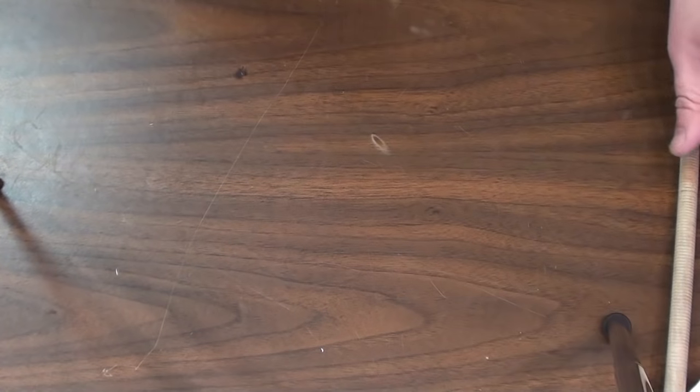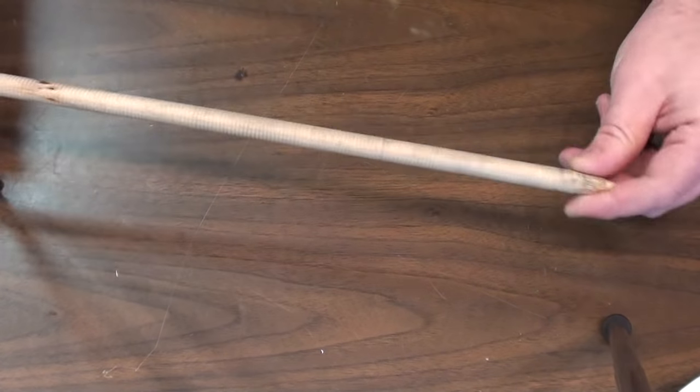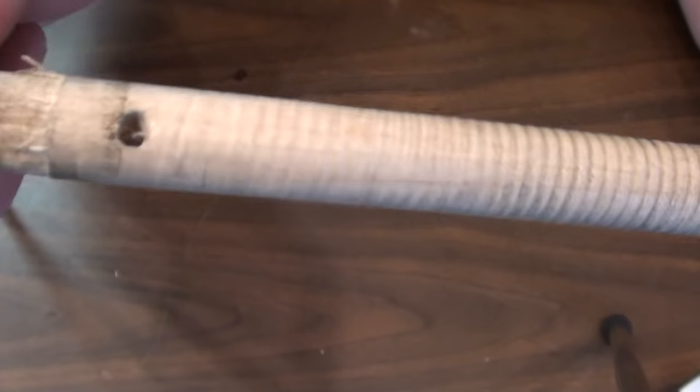To make your links you're going to need a rod. I'm using a half-inch dowel. A half-inch and three-eighths are really common sizes for making chain mail.